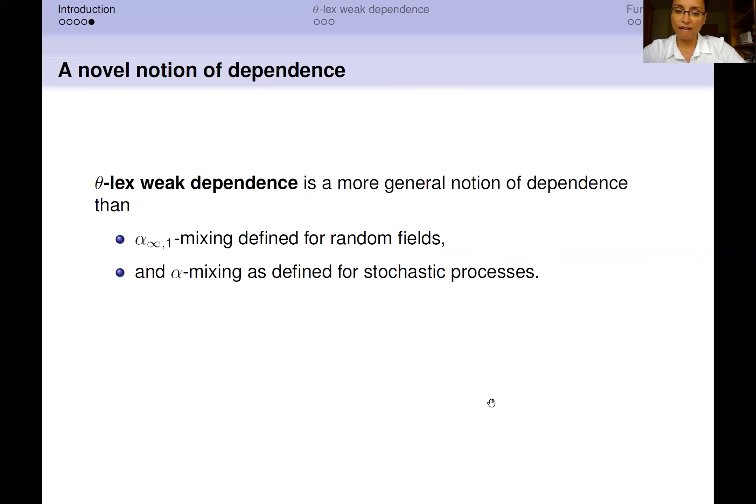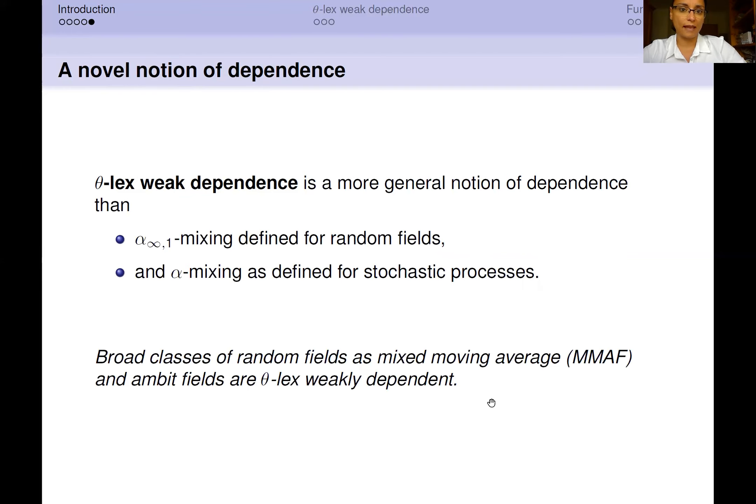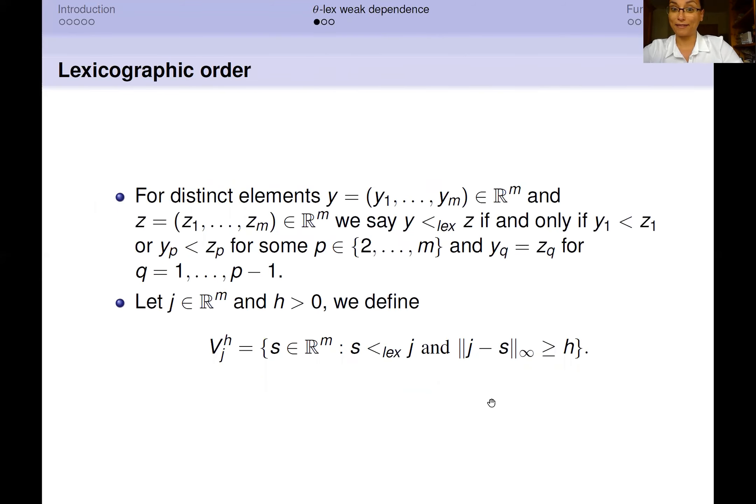In fact, we are capable of showing that classes like mixed moving average fields, which fields, and ambit fields are θ-lex weakly dependent. This means that by using this notion of dependence, we can analyze the asymptotic dependence structure of these fields in a very general way, things that so far has not been possible to do by using strong mixing notions or classical weak dependence notions.